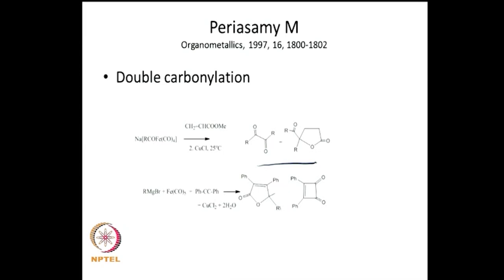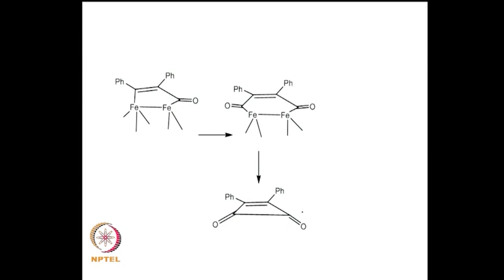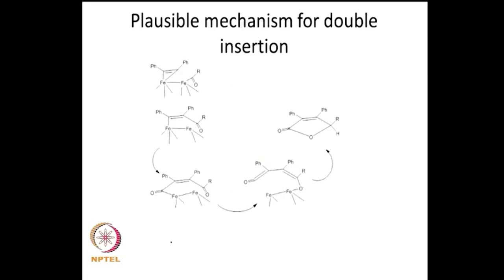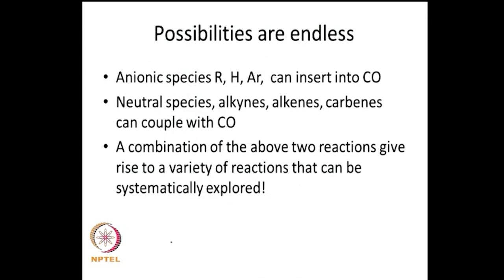We end with the double carbonylation reaction discovered by Priyassami using iron and cuprous chloride as catalyst, which leads to interesting molecules such as cyclobutenediones. Double carbonylation is a rarely observed and unique reaction. The reaction can be modified to give a variety of substrates. A possible intermediate involves iron dimerizing and coordinating to the acetylene, with sequential insertion of carbon monoxide. The possibilities are endless: anionic species like H, R, and Ar can insert CO, and a huge library of reactions can be built on the insertion of carbon monoxide.